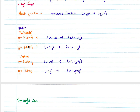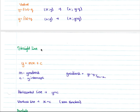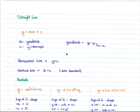Next we move on to the forms of graphs. The simplest form is the straight line, which many of you will know as y equals mx plus c, where m is your gradient and c is the y-intercept. To work out the gradient you use the formula: y2 minus y1 over x2 minus x1, taking two points with both x and y coordinates.